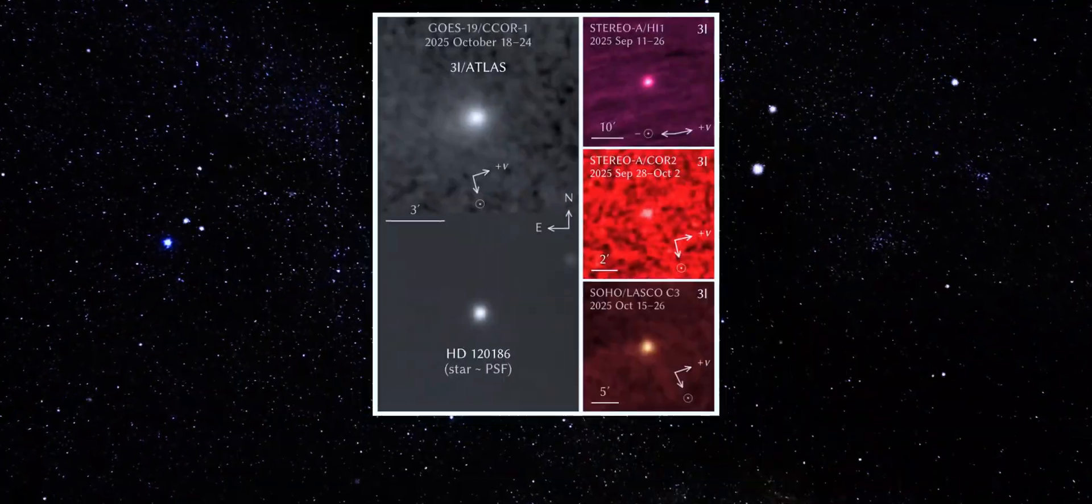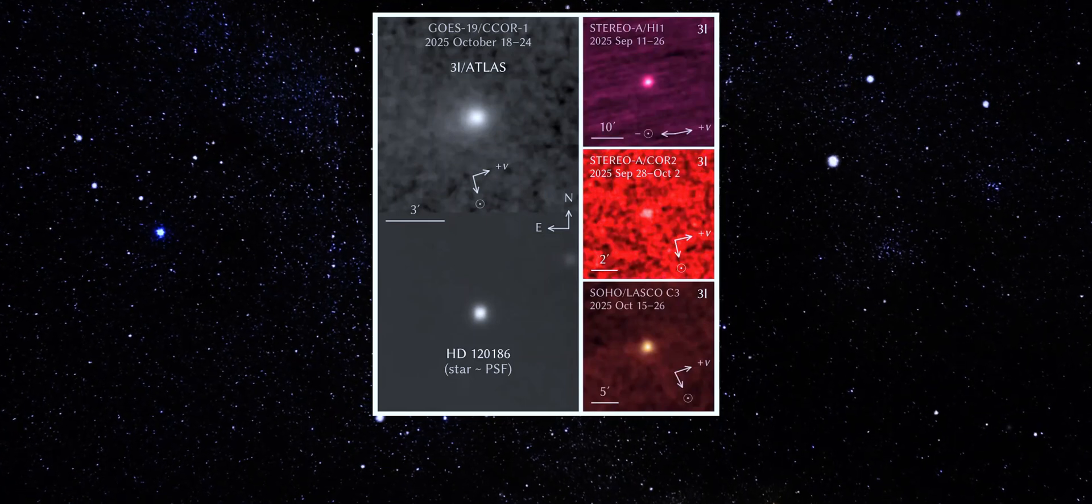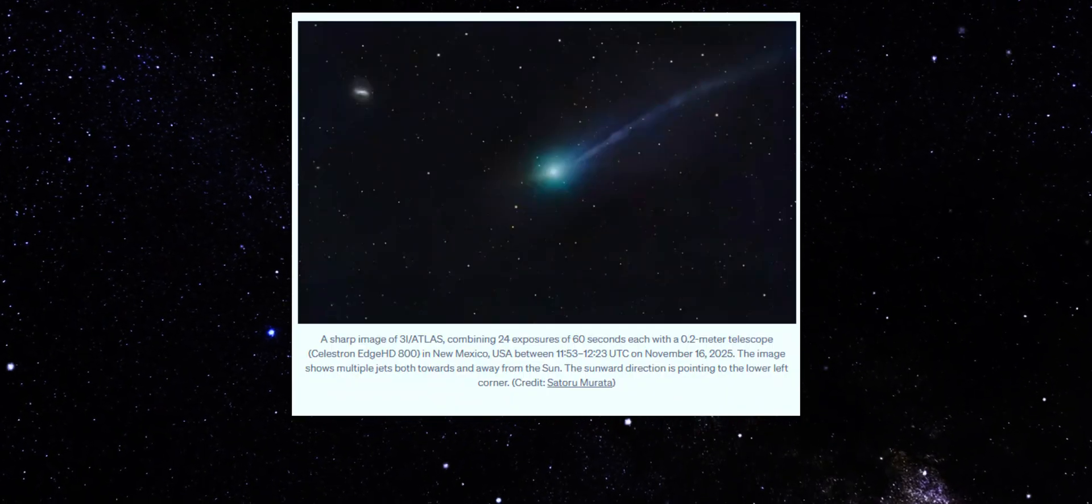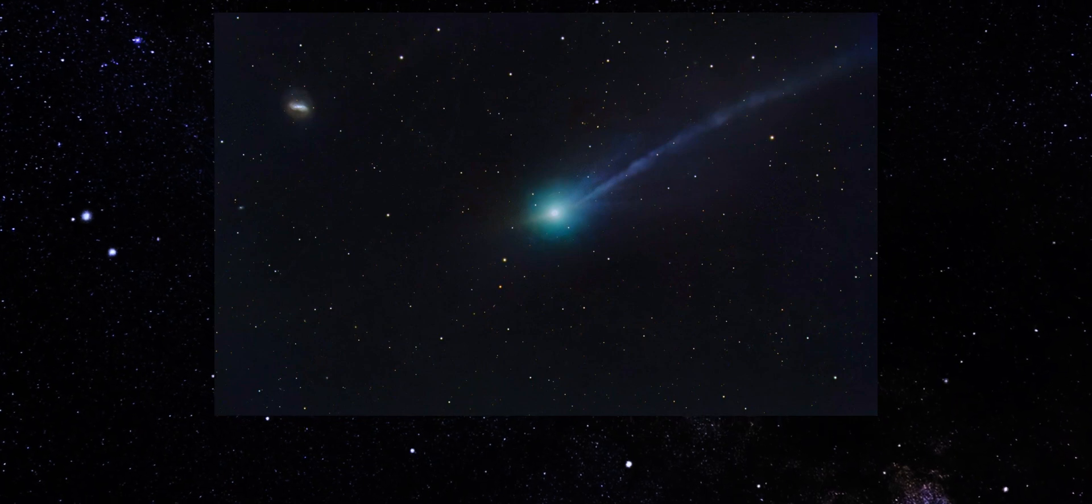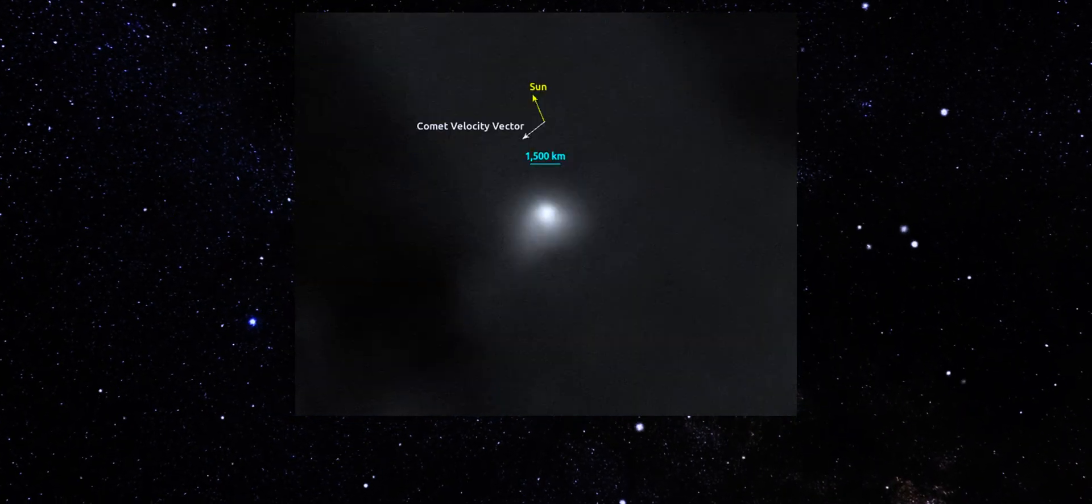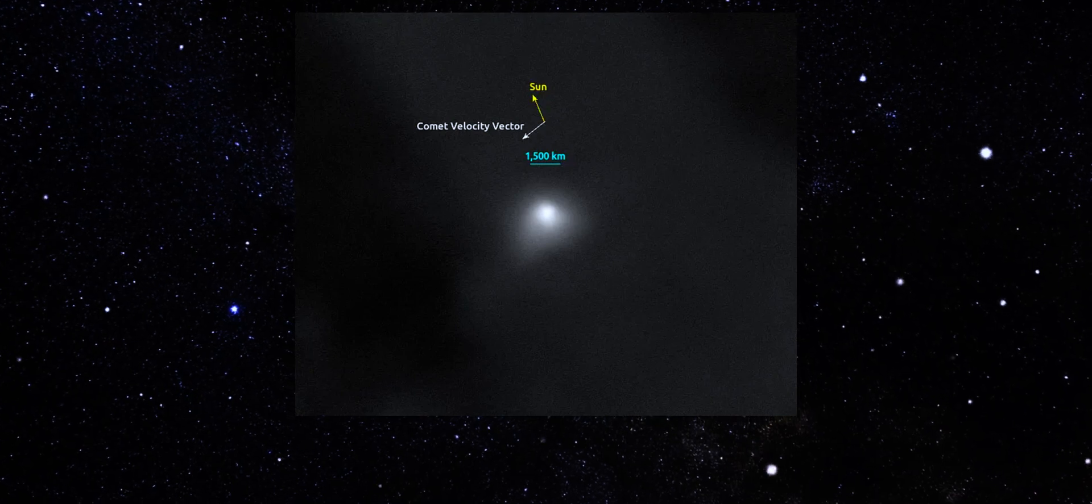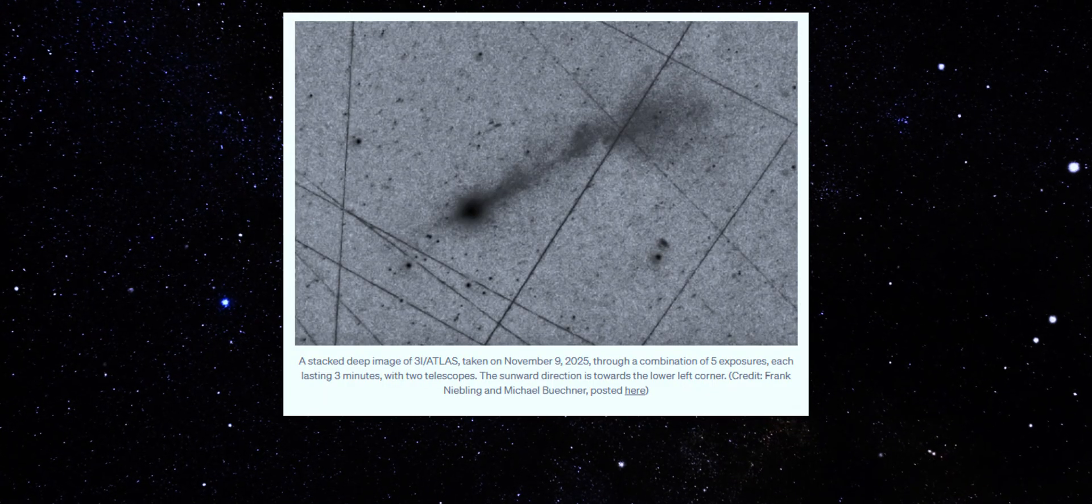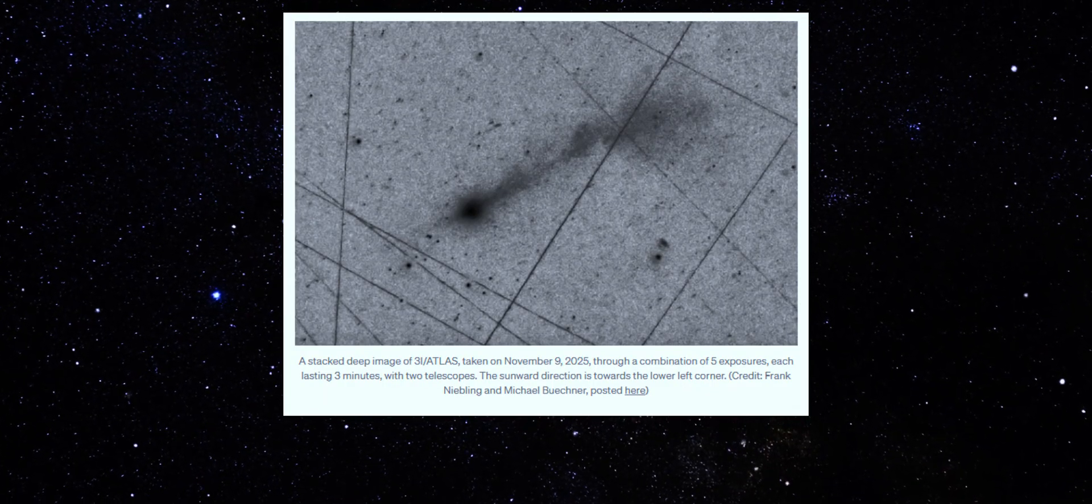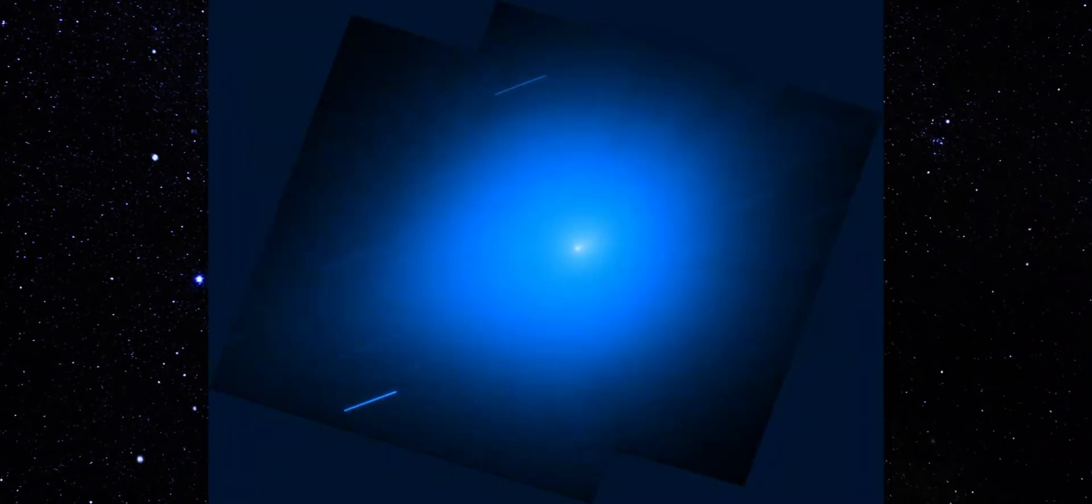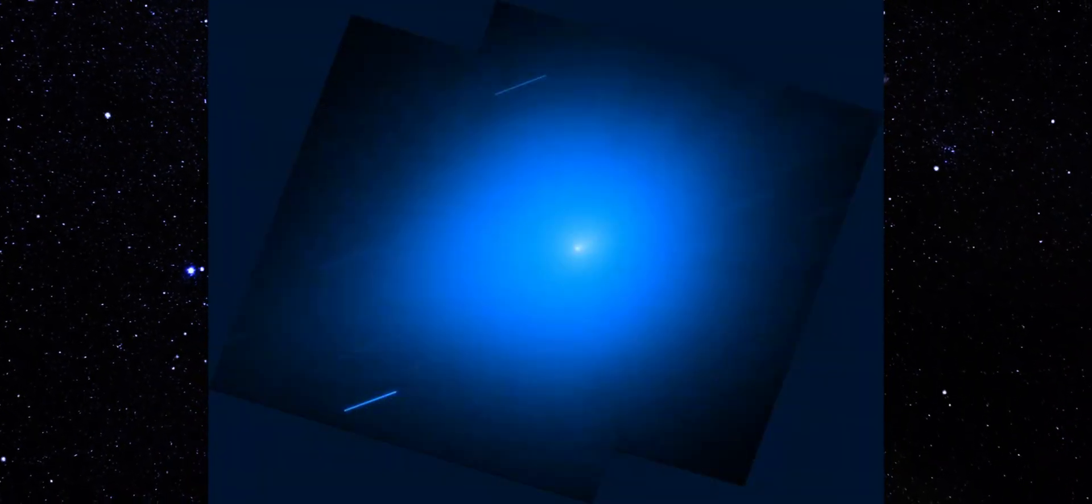Back in a neutral grayscale view, and this frame tells its own quiet story. The core sits sharply defined, darker than the surrounding haze, a hallmark of a concentrated central source. What's interesting is how smooth and uniform the outer glow appears. No significant stretching, no clumping, no signs of turbulence around the core.